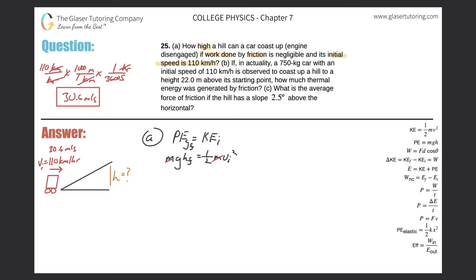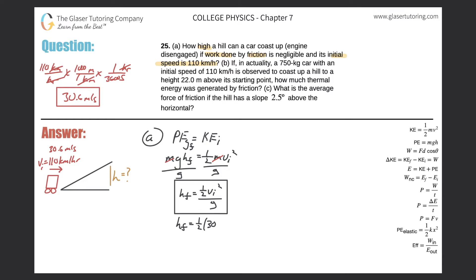Solving for height by dividing both sides by g, the final height equals one-half times the initial velocity squared, all divided by g. Plugging in: 0.5 × (30.6)² ÷ 9.80 gives a final height of 47.8 meters. That takes care of letter A.